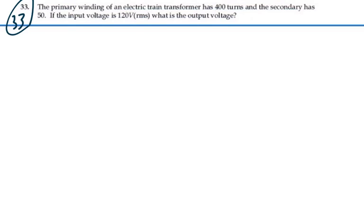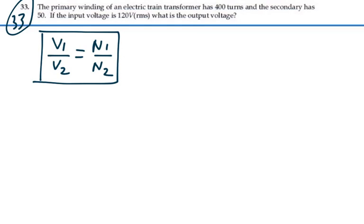Well, the ratio in a transformer, voltage primary to secondary, is equal to the number of turns in the primary to the secondary. In this case, we have ourselves a step-down transformer.